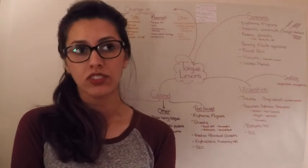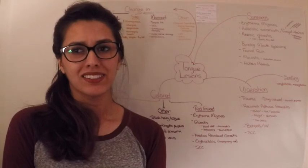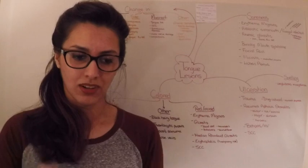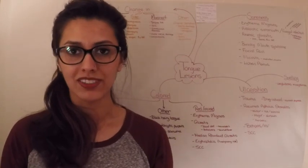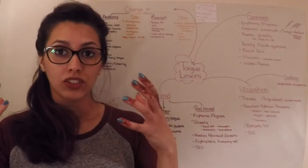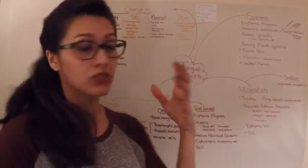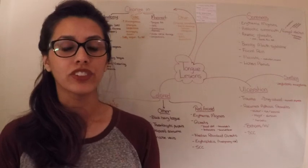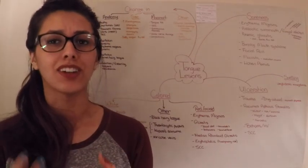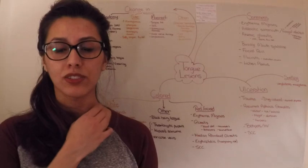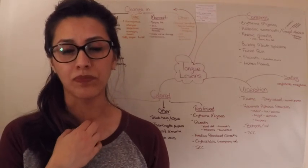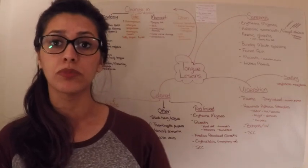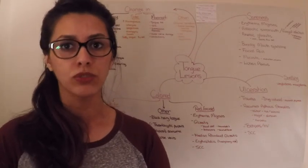I put swelling up here because I didn't know where else to put it. Amyloidosis is a disease where a protein called amyloid gets dumped into organs, and it can be dumped into the tongue and you can get swelling of the tongue. It's really important to rule that out because it can be associated with tumor of the bone marrow, so multiple myeloma.